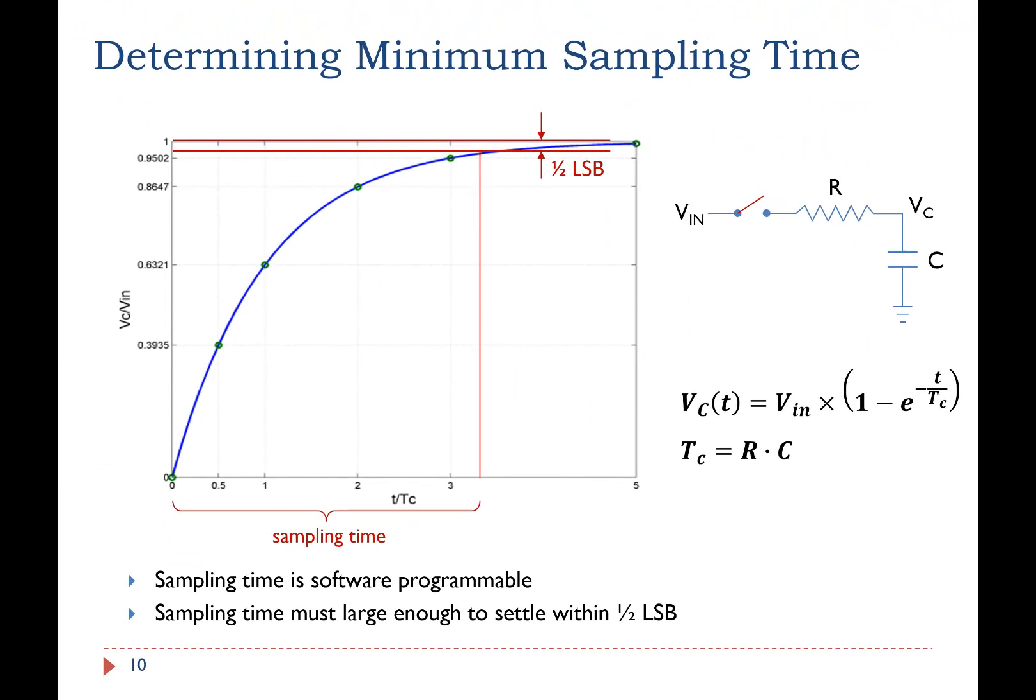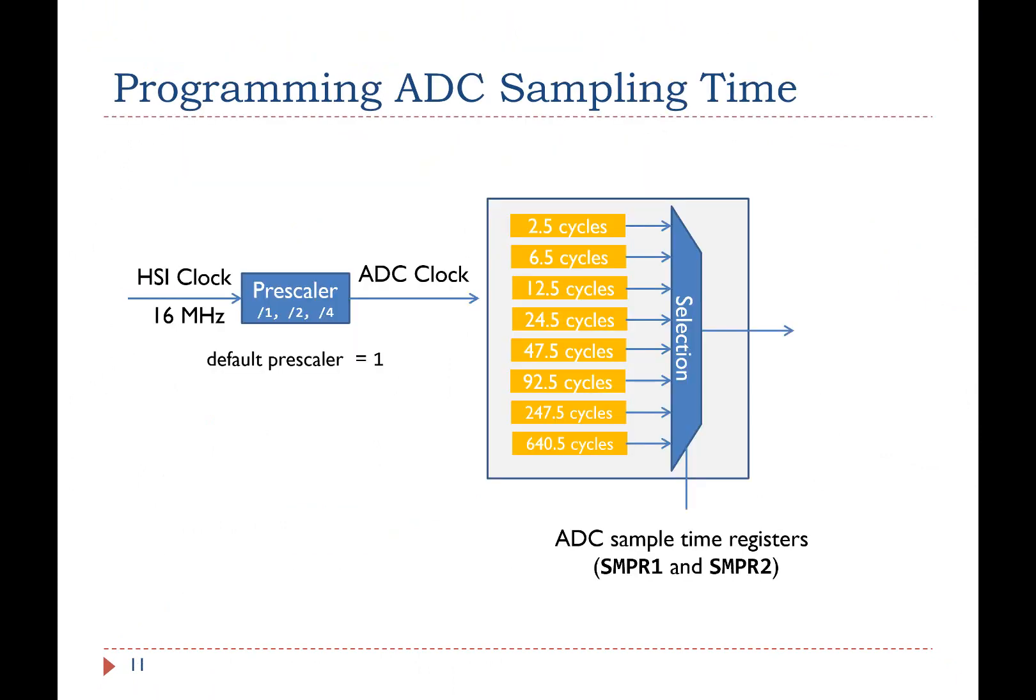An ADC module can support up to 16 input channels. The sampling time of each input channel can be independently programmed. Available sampling times are listed here, ranging from 2.5 cycles to 640.5 cycles.